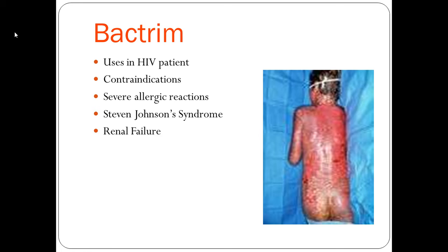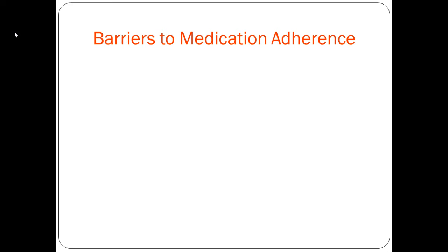Bactrim is a major offender of Stevens-Johnson syndrome. In HIV patients, good skin assessment is critical — if the skin, our first layer of protection from infection, breaks down, the patient is at higher risk for infection on top of an already decreased immune system. These patients are often treated in burn units or on the floor with large dressings, and it can be very painful. Additionally, Bactrim can cause renal failure, so we encourage patients to increase fluid intake throughout the day to flush it through the kidneys.